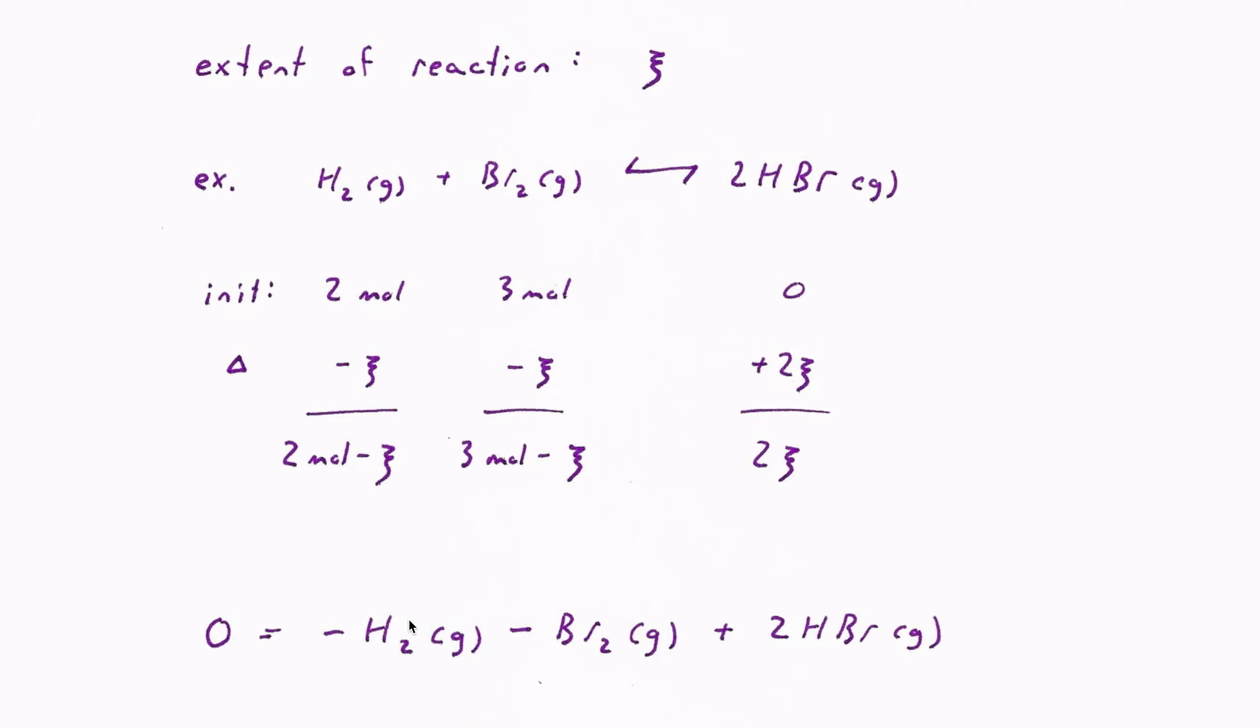The advantage now is that the coefficients in front of each of these species, the negative one in front of the H2 and the Br2, tells me that those are reactants, and that matches the sign of the extent of reaction in this expression for the total amount of each reactant or product.